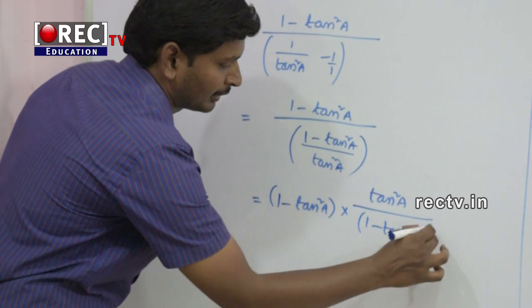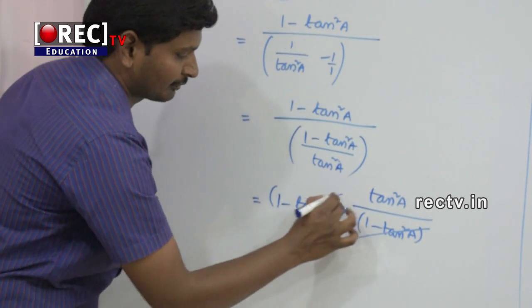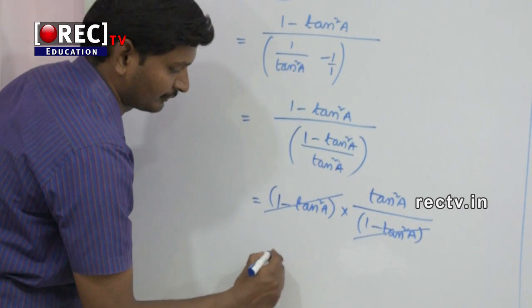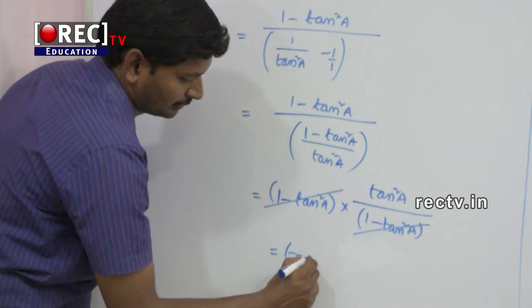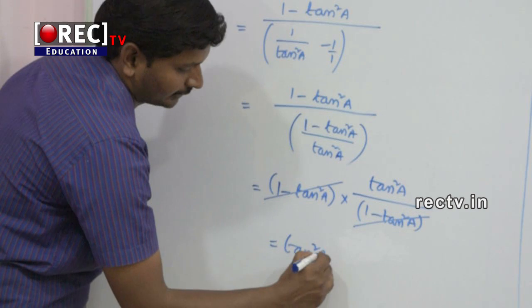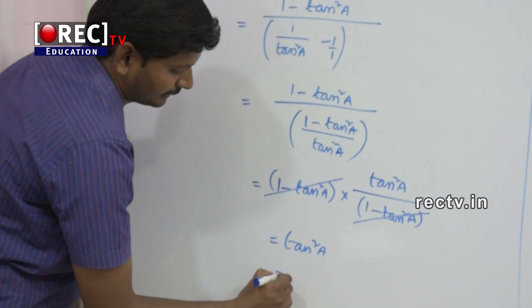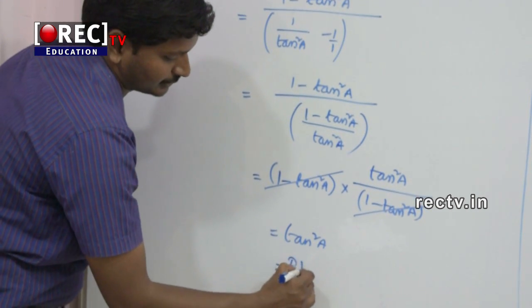Converting this: (1 - tan²a) divided by (1 - tan²a) divided by tan²a. The (1 - tan²a) terms cancel, and the answer is equal to tan²a, which equals RHS.